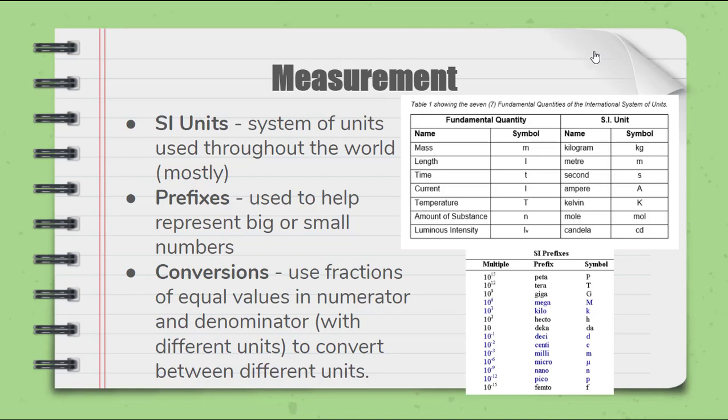These prefixes apply to all of the different SI units. So I could have centigrams, I could have centiseconds, I could have centimoles. So all of these things can utilize these prefixes. You'll get a chart, you'll get a table to easily be able to utilize these. But the ones you really want to make sure you're going to know are kilo, centi, and milli. And know how those work when you go through and do something called a unit conversion.